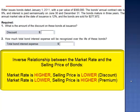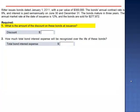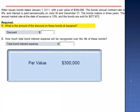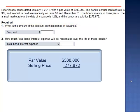Remember the inverse relationship between the market rate and the selling price: when the market rate is higher, the selling price is lower. What is the amount of the discount on these bonds at the date of issuance? The discount is the difference between the par value $300,000 and the selling price $277,872 — a discount of $22,128.